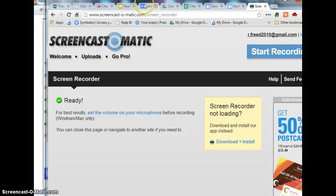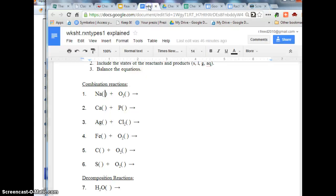Alright, so now we're going to look at how to do types of reactions. Right here, I'm going to show that I know how to do combination reactions. So here's sodium plus oxygen, and it tells me to include the states of the reactants and products.